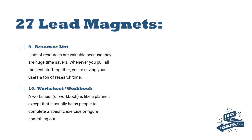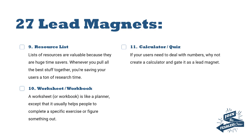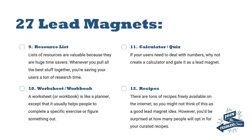Number ten is a worksheet or workbook. It's a bit like a planner except it usually helps people complete a specific exercise or figure something out. Alongside this video I've also provided a nine-page PDF document — a five-day challenge where you can work out what lead magnet you're going to produce, why, and who it's for. Number eleven is a calculator or quiz — useful for accountants, bookkeepers, or anyone who deals with numbers regularly.